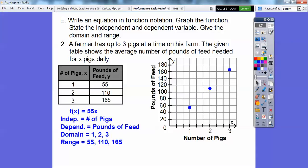The independent variable is the number of pigs. The dependent variable is the pounds of feed. The pounds of feed totally depends on how many pigs there are. Okay, so your domain is all the inputs or your x's, and your range is all these numbers right here. Okay, easy enough right there.